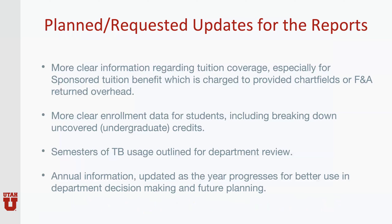The following are requested updates for the reports: more clear information regarding tuition coverage, especially for sponsored tuition benefit which will be charged through provided chart fields or F&A return overhead; more clear enrollment data for students including breaking down uncovered or undergraduate credits; semesters of tuition benefit usage outlined for department review; and annual information updated as the year progresses for better use in department decision making and future planning.